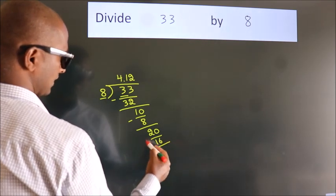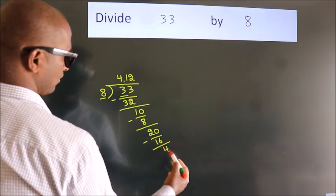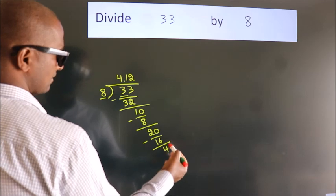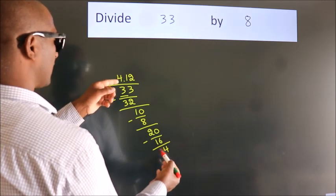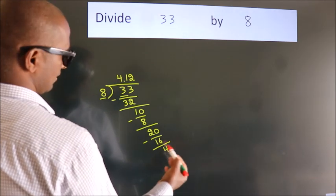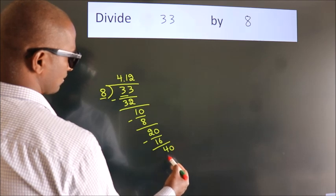Now, we subtract. We get 4. After this, we already have the decimal, so directly take 0. So, 40.